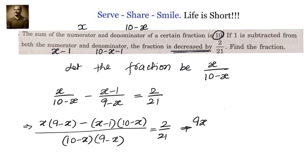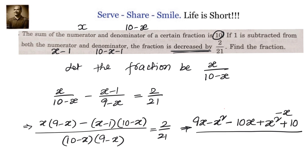Expanding: x(9 minus x) gives 9x minus x². Then minus (x minus 1)(10 minus x): multiplying out gives minus 10x plus x² plus 10 minus x. The denominator expands to 90 minus 10x minus 9x plus x².